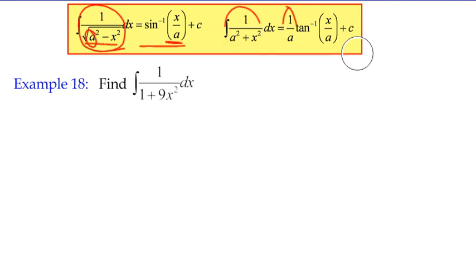Find the integral of 1/(1 + 9x²) dx. Quite clearly, if we look at the two forms, it's a sum of terms on the denominator with no square root sign, so straight away I know my answer is going to have something to do with inverse tan.